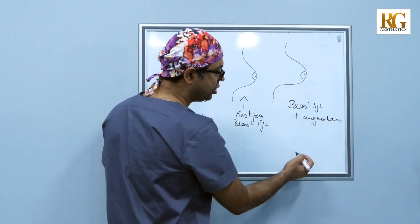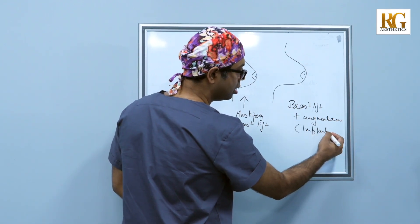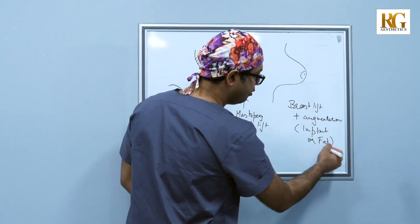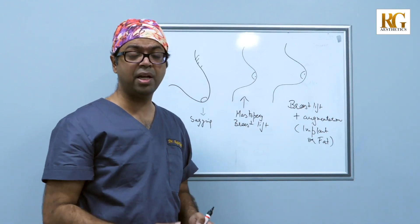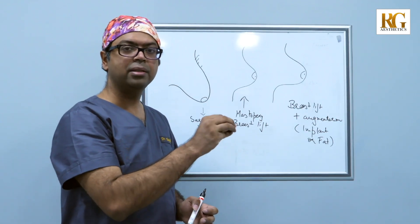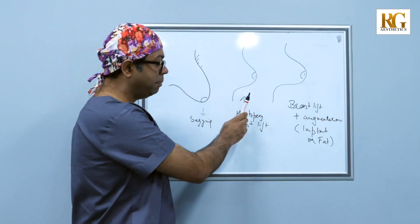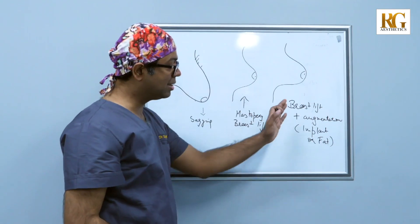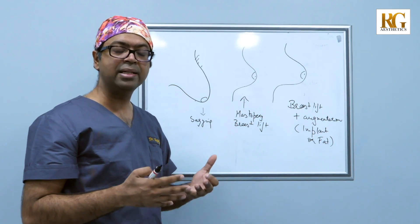This augmentation can be either by implant or fat. Yes, we can take out the fat from their body, maybe abdomen, back, thighs, wherever they have excess fat, and that fat can also be used to augment the breasts. So if you have a sagging breast you need a breast lift surgery. A breast lift surgery combined with increase in size is called as a mastopexy augmentation. So depending upon what a woman needs, we can decide what they want and decide the surgery.